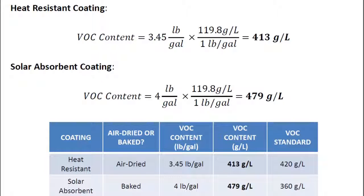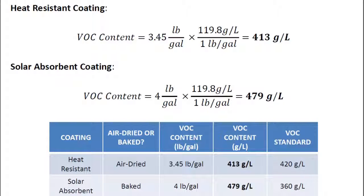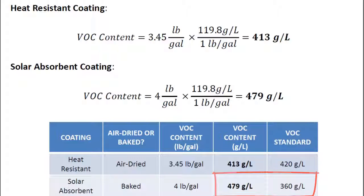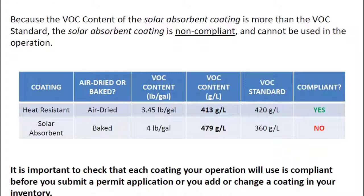After converting the VOC content from pounds per gallon to grams per liter, we can check for compliance. Because the VOC content of the heat-resistant coating is less than the VOC standard, the heat-resistant coating is compliant. Because the VOC content of the solar absorbent coating is more than the VOC standard, the solar absorbent coating is non-compliant and cannot be used in the operation.